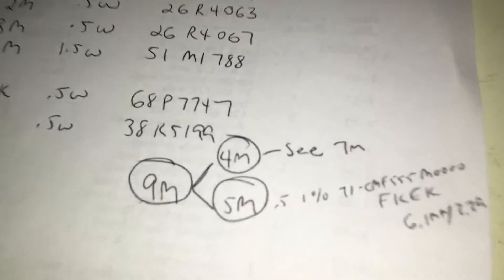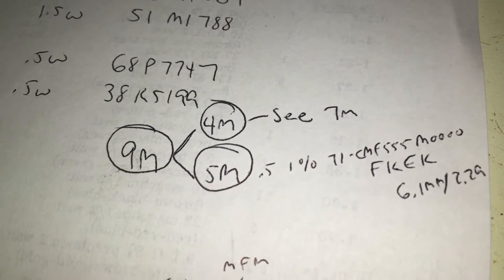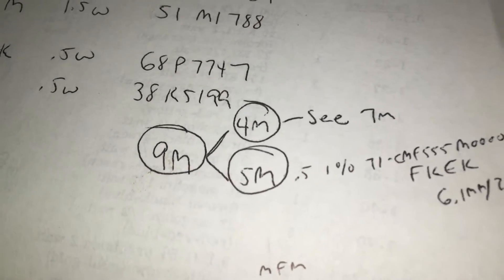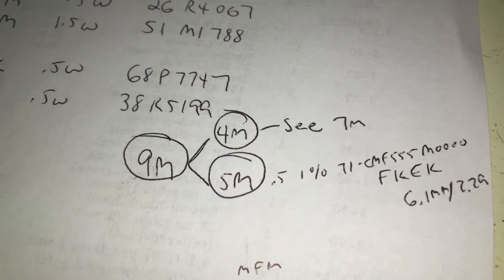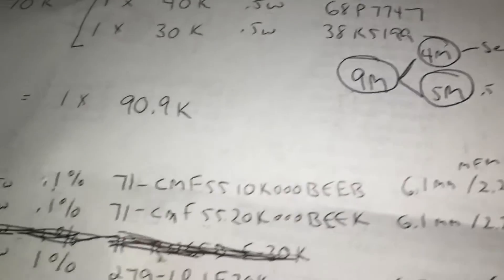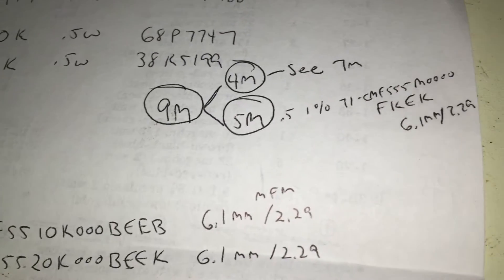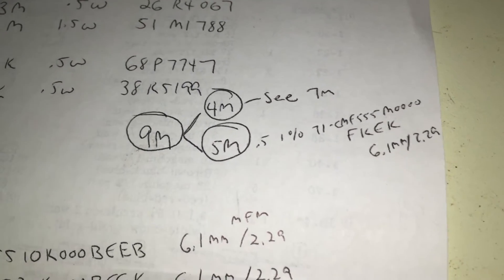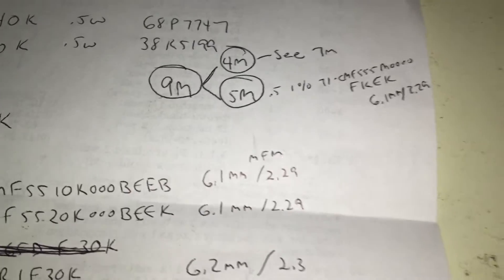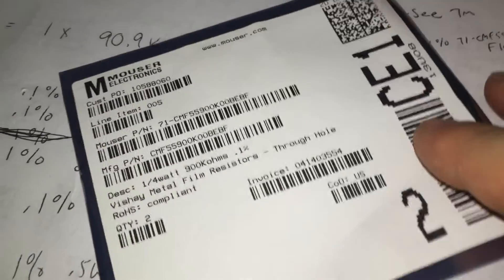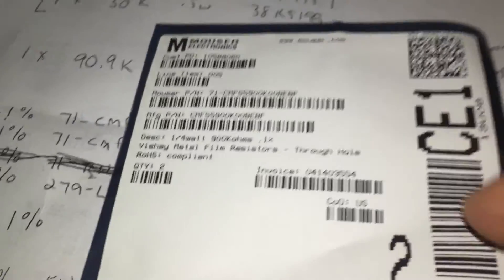For instance, 9 meg is a combination of 4 and 5. But 5 would be a 1% resistor. And 4, which says 7 meg, which is another combination, is actually a 0.1% tolerance. So it's well within tolerance. The resistors have arrived in a box over here. They're of different sizes and quality.